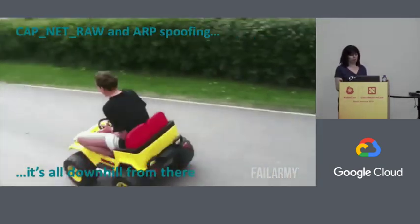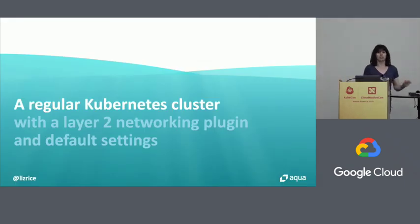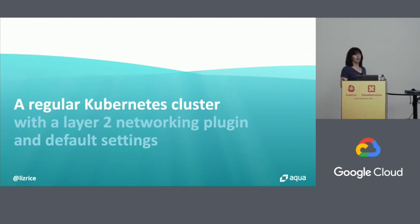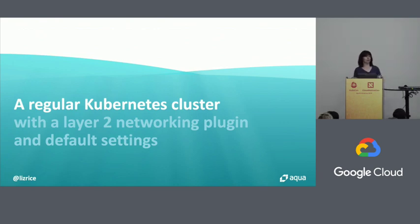What I'm going to show you is on a regular, ordinary Kubernetes cluster with default settings, a layer two networking plugin. The one thing I have changed — only to make it more reliable as a demo — is that out of the box you would get two instances of CoreDNS, and I've deleted one so there's only one.